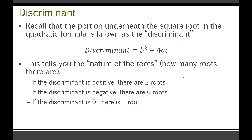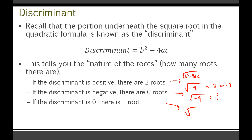If your discriminant is equal to zero, you'll actually have one root. The reason for this is because in the quadratic formula, the discriminant is underneath the square root sign. If you square root a positive number like 9, you get 3 or negative 3 — so two different roots. If you try to square root a negative number like negative 9, there is no square root. But the square root of zero is just zero — there's no positive or negative zero, so there's only one root.